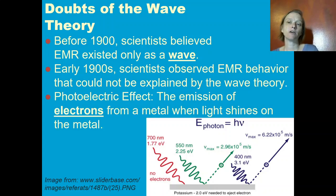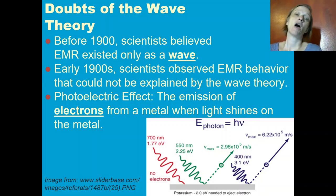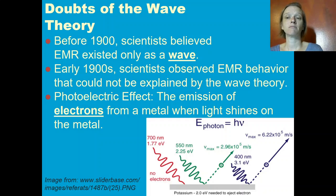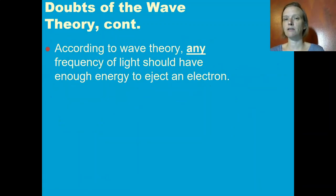One particular effect that was observed is called the photoelectric effect. When you shine light on a metal of a particular wavelength, the metal can actually eject electrons. You can actually cause a current in the metal by ejecting these electrons by shining particular wavelengths of light.